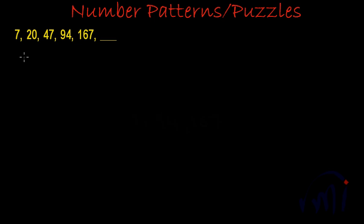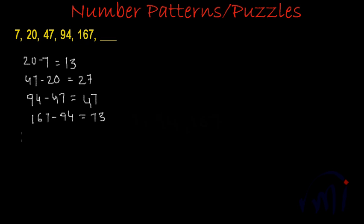So 20 minus 7 is 13. 47 minus 20 gives us 27. 94 minus 47 gives us 47. And 167 minus 94 will give us 73. So these are the differences. I don't think we can find any logic in these differences, so we have to go to our next step.